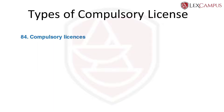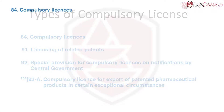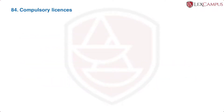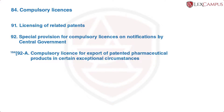An application can be made under Section 91, and an application can also be made under Section 92. Finally, an application can be made under Section 92A. Sections 91, 92, and 92A are special forms of compulsory licenses which can be used in certain cases.